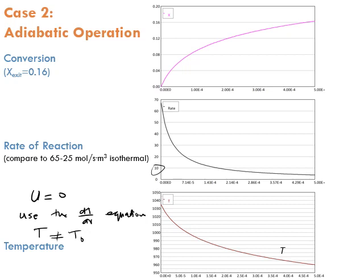The lower rate of reaction is due to lower temperature. In the previous case we operated at 1035 K; now it starts at 1035 K but drops down to around 960 K. That's because the reaction is endothermic and operated adiabatically — the reaction mixture absorbs heat from itself, and since you are not compensating by supplying heat from outside the system, the temperature drops. So obviously you don't want to operate this reaction adiabatically.